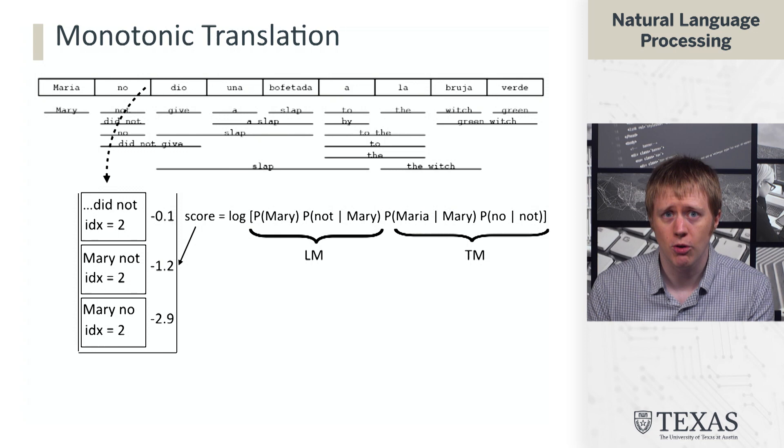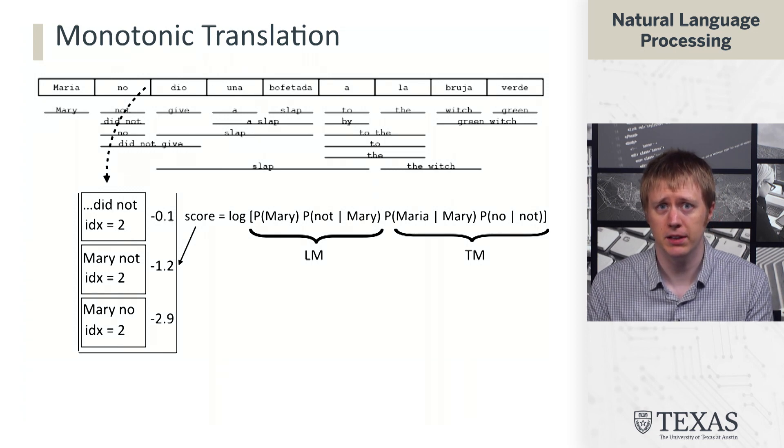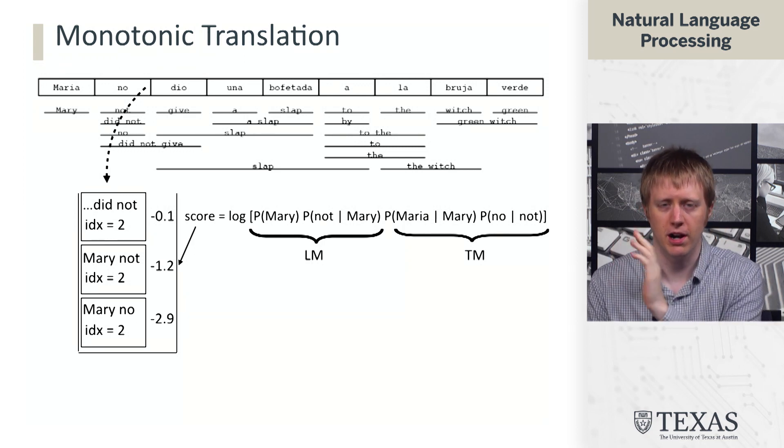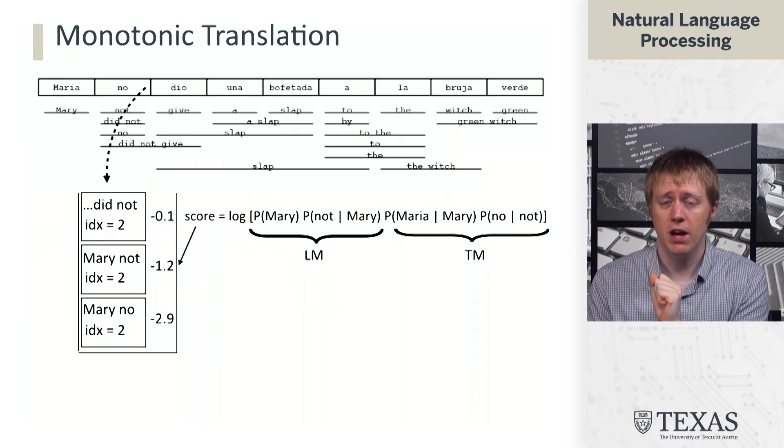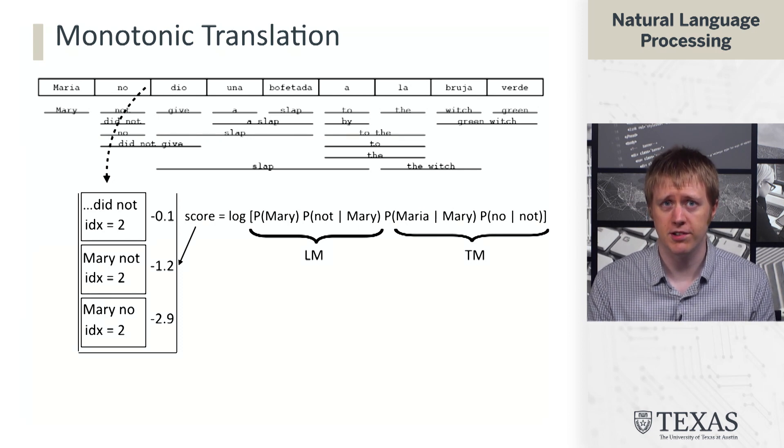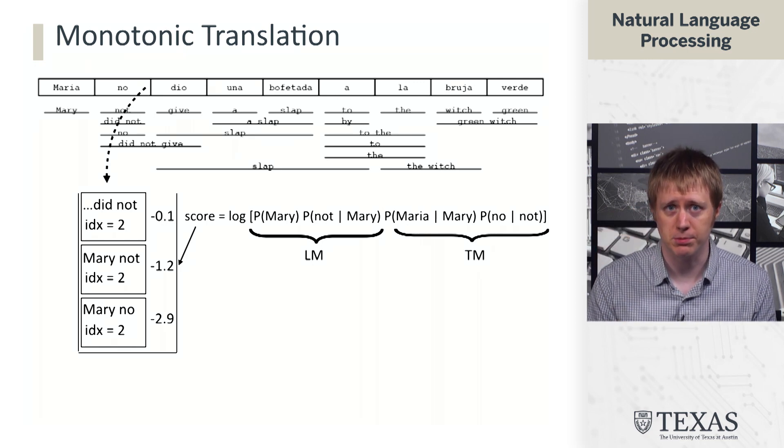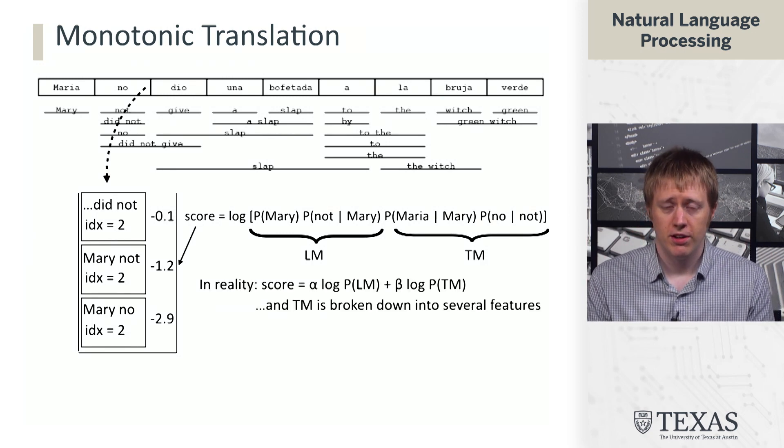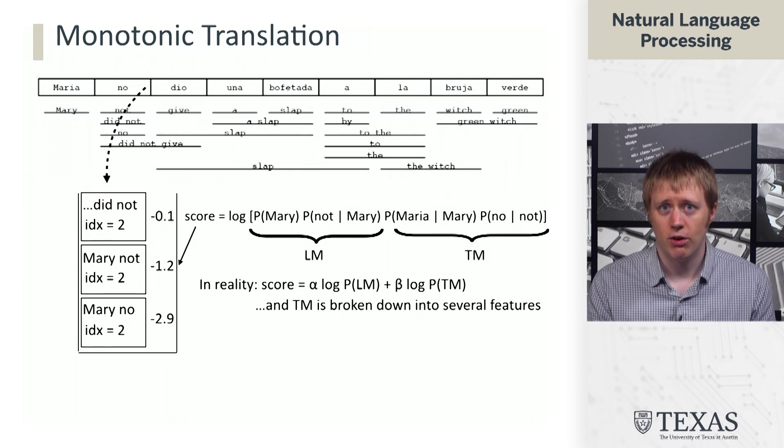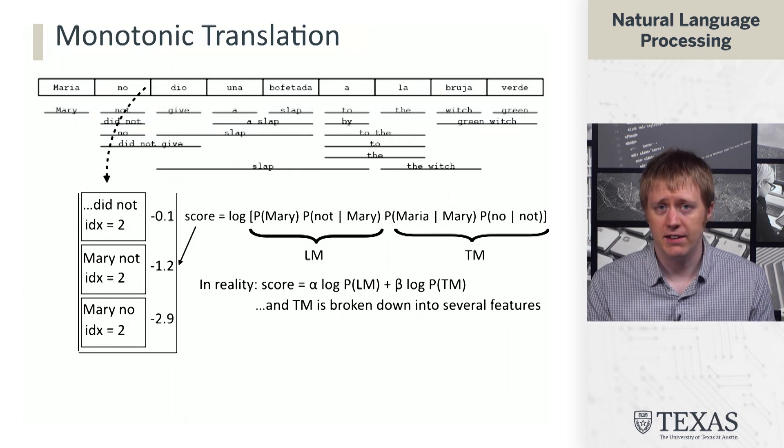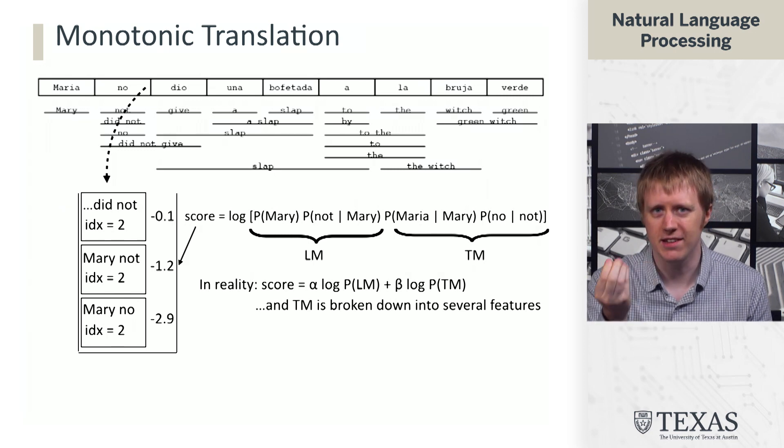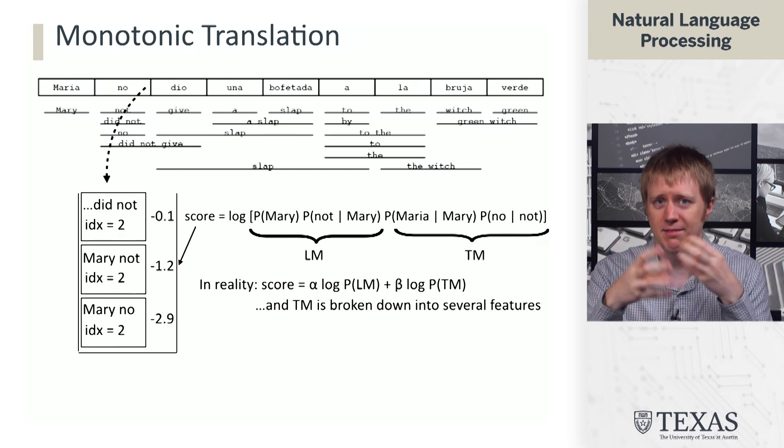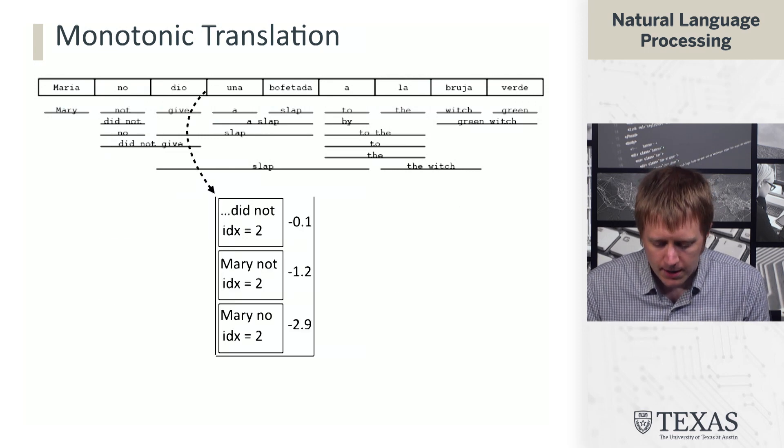And again, so the score here has to account for both the language model probabilities, which are based on the number of English words you've generated so far, and each one has to condition on the prior couple of English words. And we also need to incorporate the translation model, which is just the score of each of these phrase translation options that we pick up. Basically the score of each of these underlined segments in the lattice. So the score here is a product, or let's call it a sum of log probabilities. And in reality, you have to weight these things differently. So there's some extra parameters here. And real translation models actually use several different features that we then have additional weights on.